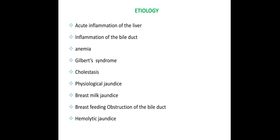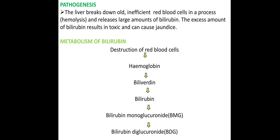For etiology, the causes include acute inflammation of the liver, bile duct inflammation known as cholangitis, anemia, Gilbert syndrome, cholestasis, physiological jaundice, breast milk jaundice, breastfeeding obstruction of the bile duct, and hemolytic jaundice. These are the main causes.